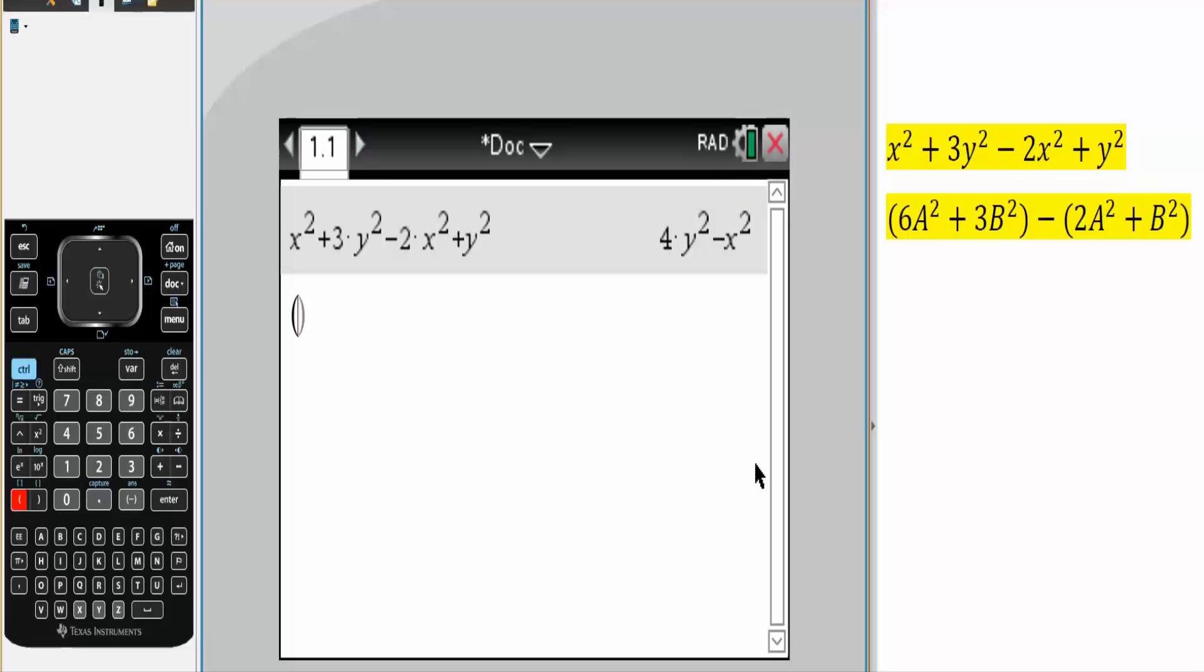Now you do the same thing for the second one. So we have 6 times a squared plus 3 times b squared minus parentheses 2 times a squared plus b squared, like this. Hit enter, and this is the final answer to the problem. That's all you need to do.